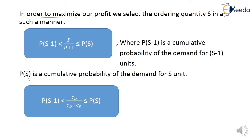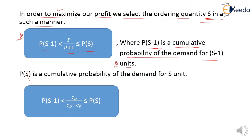In order to maximize profit, we select the ordering quantity S in such a manner that: P(S−1) < P/(P+L) ≤ P(S). This is a very important relationship — please remember it. P(S−1) is the cumulative probability of demand for S minus 1 units, and P(S) is the cumulative probability of demand for S units.